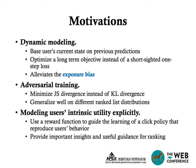The second motivation is adversarial training. With adversarial training, we minimize JS divergence instead of KL divergence, which helps the model generalize well on different rank list distributions. The third point is that we can model users' intrinsic utility explicitly. We use a reward function to guide the learning of a click policy that reproduces users' behaviors. The reward function recovers users' intrinsic utility and can provide important insights and useful guidance for learning the ranking function.